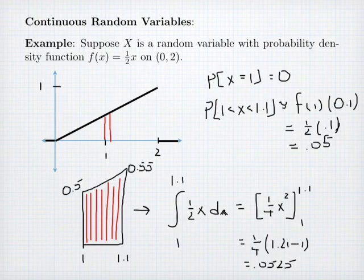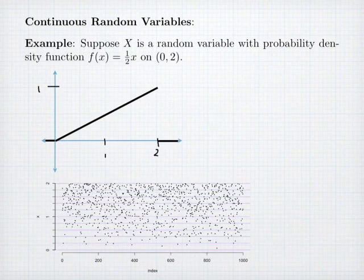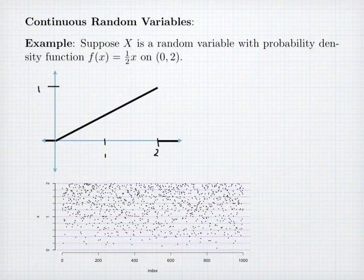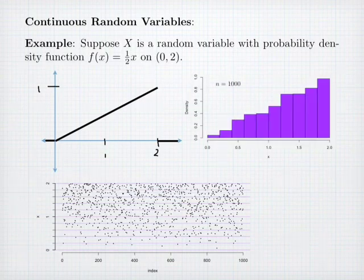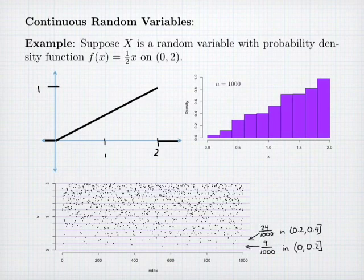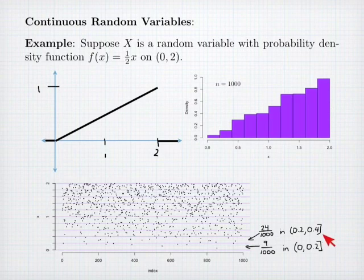So it's integration that we use to calculate total probabilities. To make this more tangible, I've simulated this probability distribution in R and generated 1,000 different data points, plotted below. Notice that near 2, where the density is higher, I have a lot more dots, and near 0, where the density is low, I have a lot fewer dots. Plotting a histogram allows me to look at those dots and figure out how many I have in different locations — in other words, binning my data values. In the first interval from 0 to 0.2, I counted 9 dots out of 1,000. In the second interval from 0.2 to 0.4, I counted 24 dots out of 1,000.